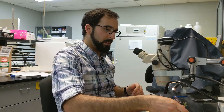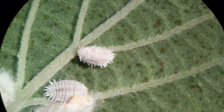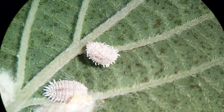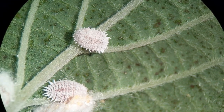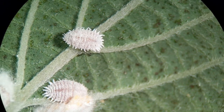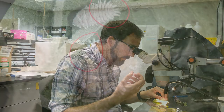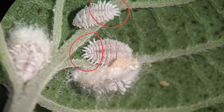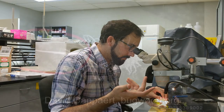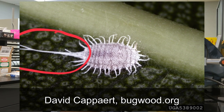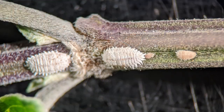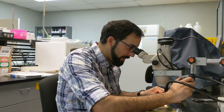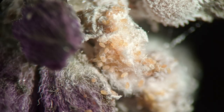So what I'll do is look under the microscope at some of the matures. I can see them moving around. I see a dark band going down the back. You can also see that there are some waxy filaments that aren't protruding too long. There are some mealybugs called long-tailed mealybugs that have very long waxy filaments coming off the rear — in this case they're not very long, they're short and relatively even around the back. The egg sacs are quite filamentous with yellowish eggs.